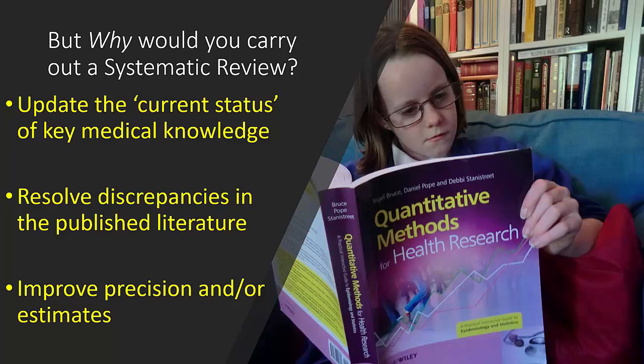For example, existing papers with a small sample size will have large confidence intervals — in other words, poor or low precision for the results they have measured. But by combining the data from several papers via pooling, we should be able to arrive at a better estimate with much higher precision, i.e. a smaller confidence interval. We must carry out a systematic review using our set protocol in a systematic way such that the whole process from beginning to end is repeatable.